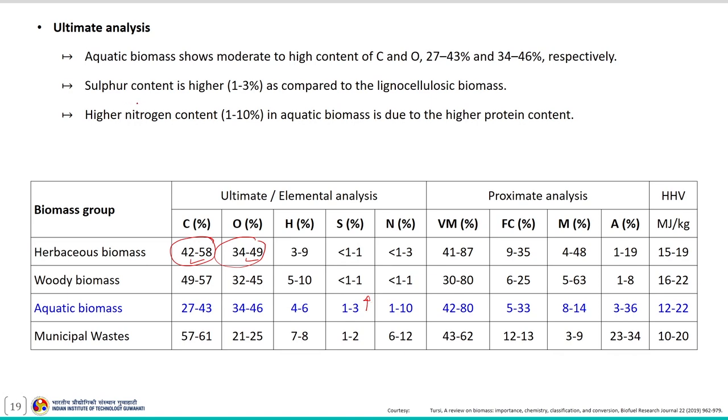If the media composition contains relatively higher concentration of sulphur, then these aquatic species will uptake the sulphur and accumulate it during their growth period, which eventually reflects in its composition. Similarly, the higher nitrogen content in aquatic biomass is mainly due to the higher protein content in its composition.